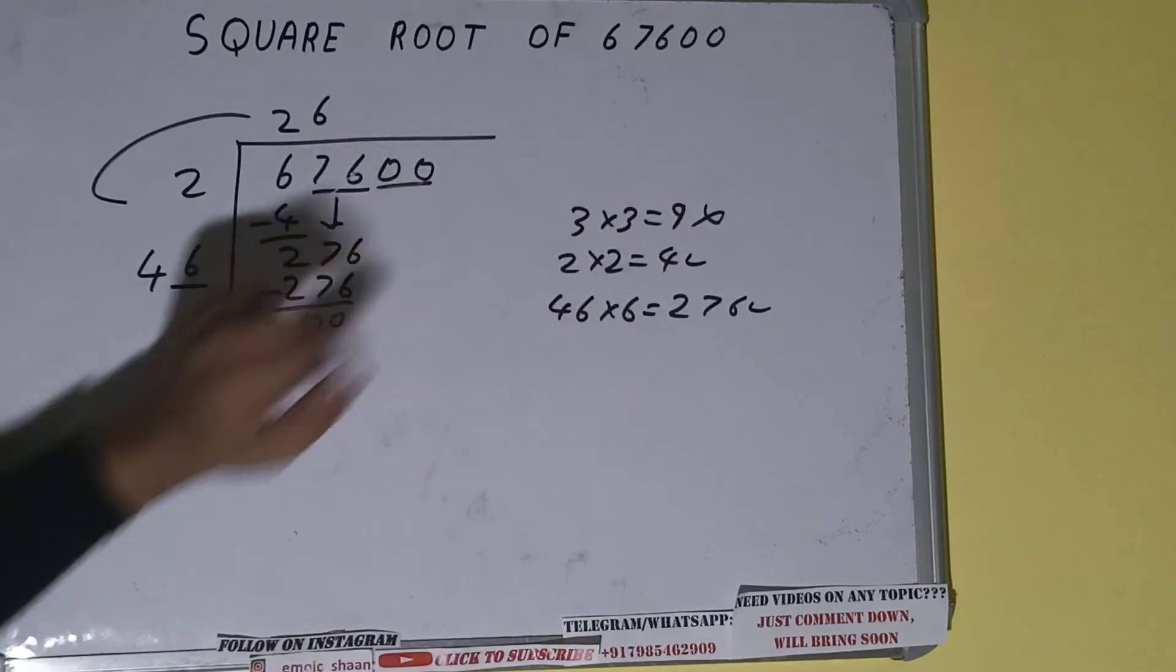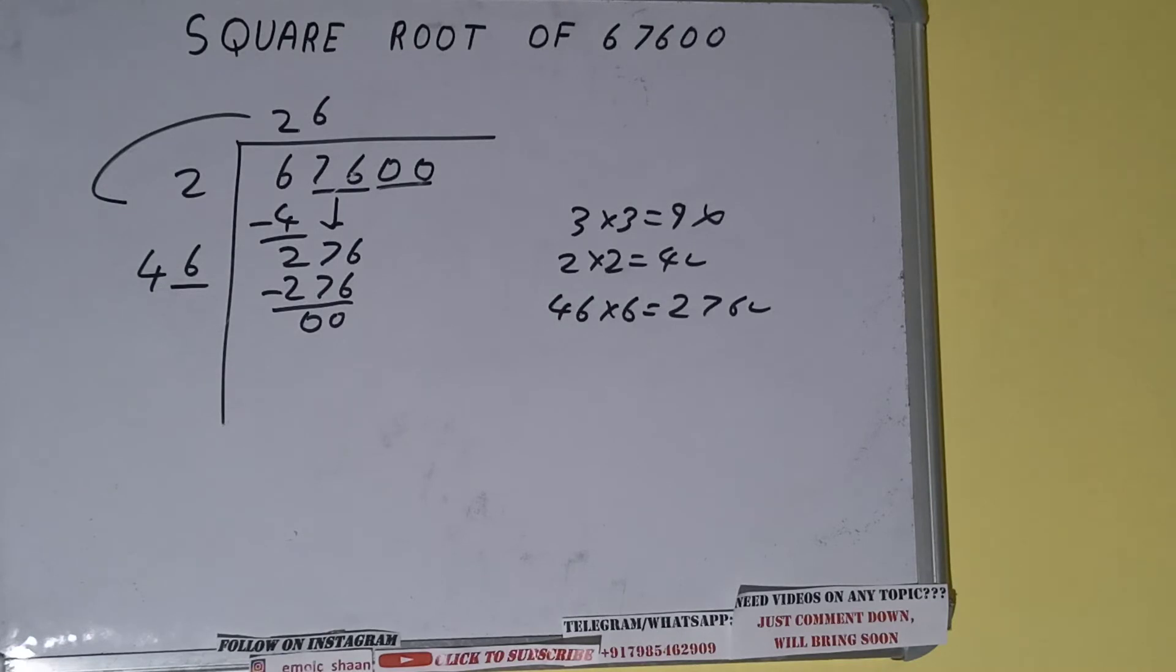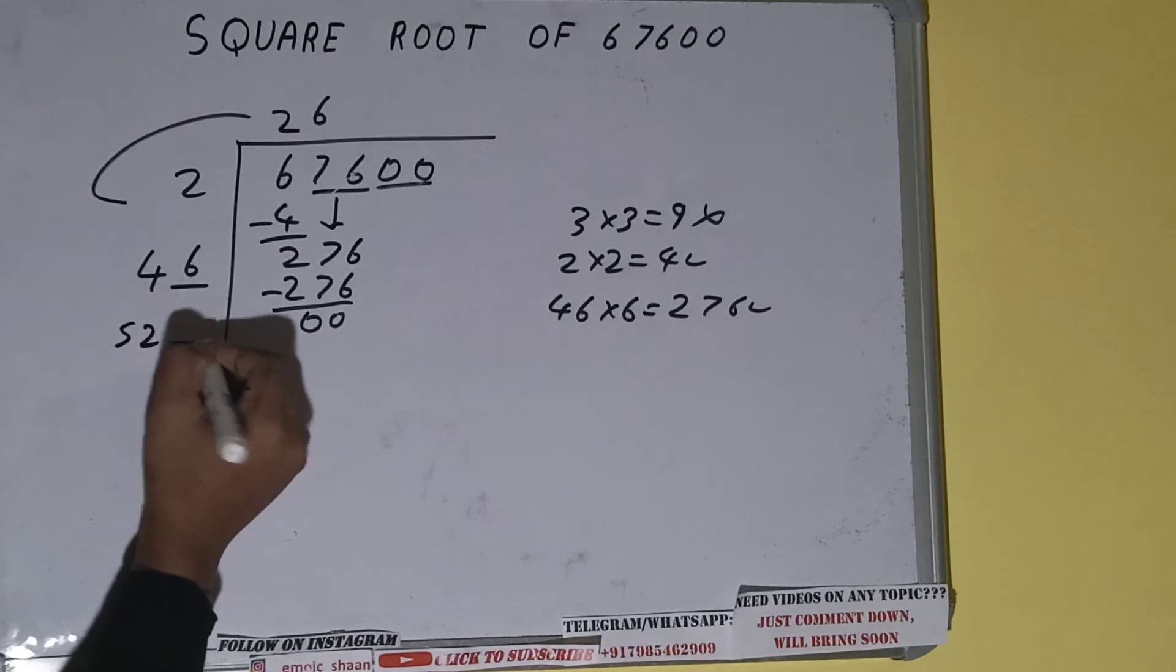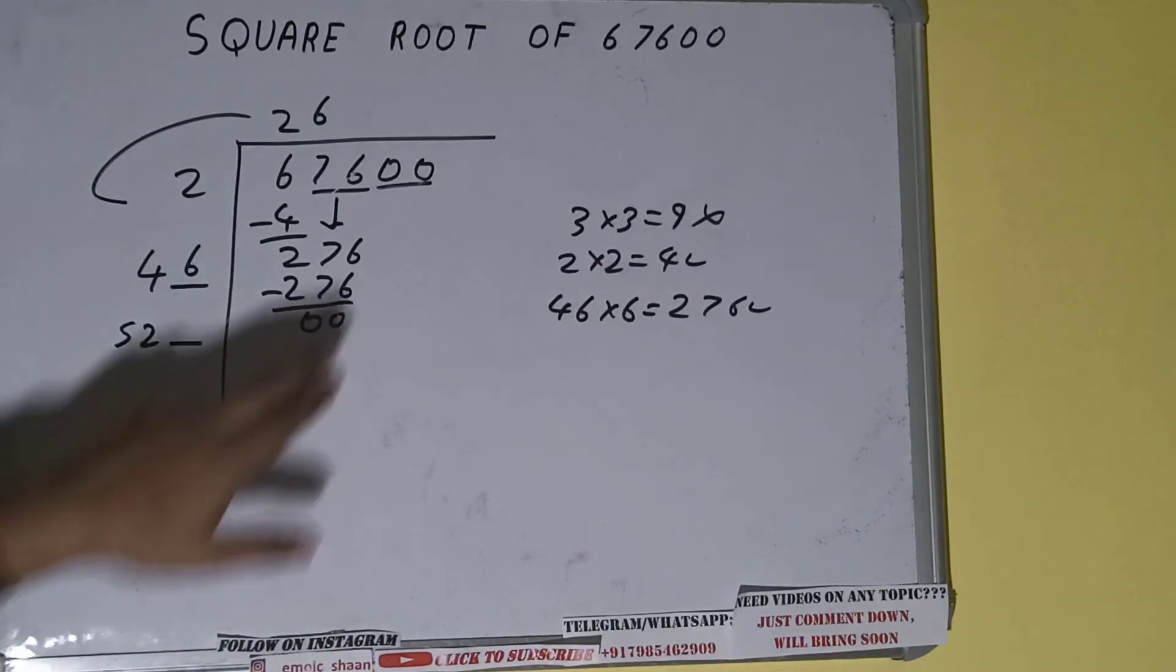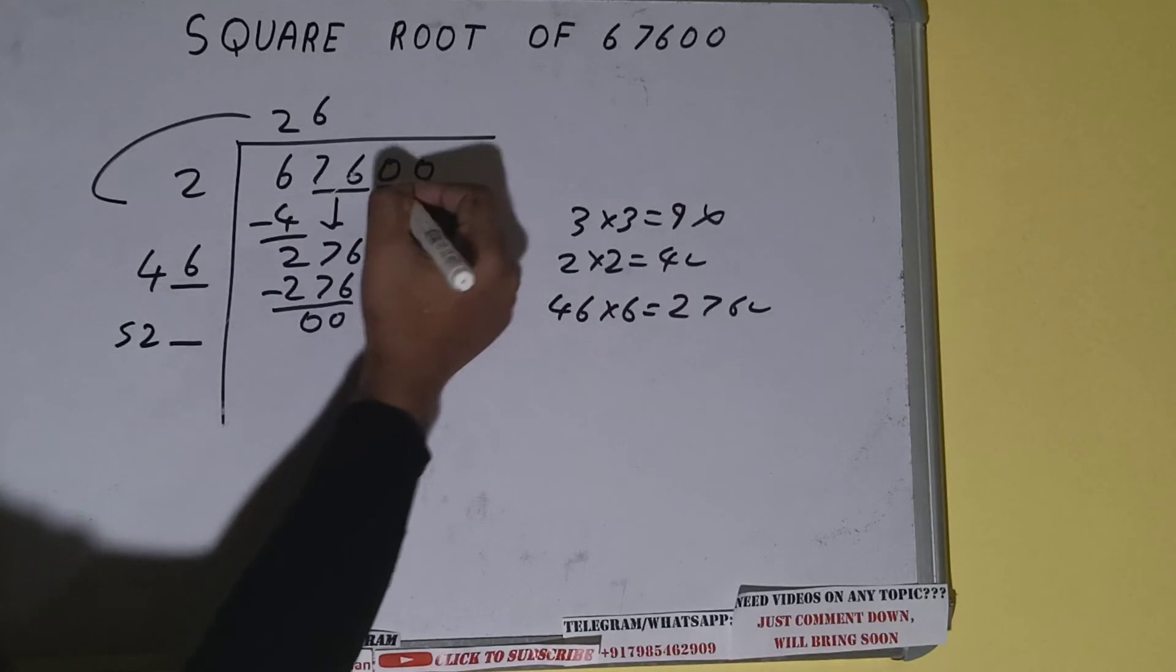So 46 into 6 we did, so add both. So six plus six will be 52. Write it here and keep a digit extra, and this pair of zero which we need to divide we'll bring it down.